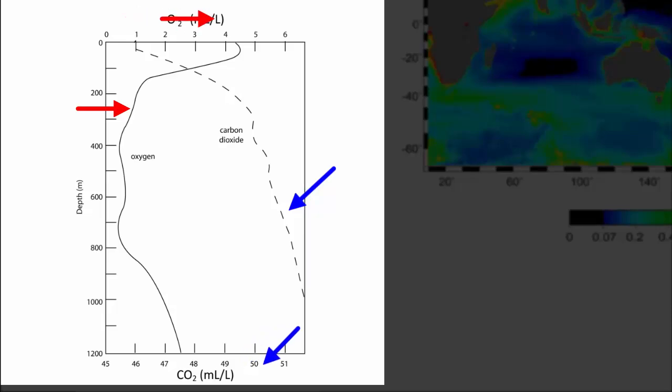For oxygen gas, values range from 0 on the left to 6 milliliters per liter on the right. For carbon dioxide, values are much higher, ranging from 46 milliliters per liter at the lowest to more than 52 milliliters per liter at the highest.